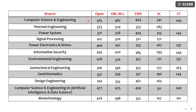Now let us enter into the cutoffs of each and every branch as per category. You can see here that for Computer Science and Engineering, the open cutoff is 565, OBC non-creamy layer is 482, EWS is 264, SC is 341, and ST is 249.